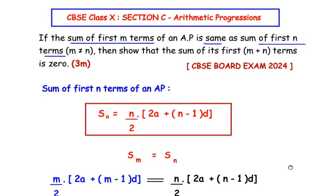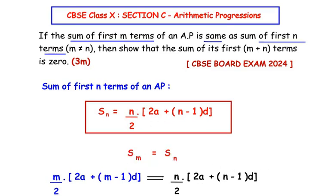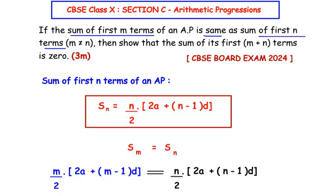Making use of this formula, let us write the equation for Sm and Sn. For Sm, we replace n with m, giving us m over 2 times 2A plus m minus 1 times D. For Sn we write the same formula with n. Now let us simplify this further.